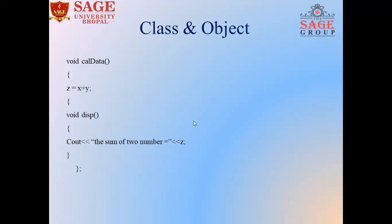Next, we use another member method called cal_data with return type void. This member function is used to perform addition of two numbers and store the answer. The body of cal_data opens, and X plus Y addition is performed and the result is assigned to variable Z. After that, we use another member method called void display. We open its body and print the console output message showing the sum of two numbers stored in variable Z. Then we close the display member function body and the class body, followed by a semicolon.